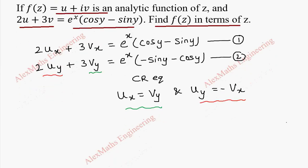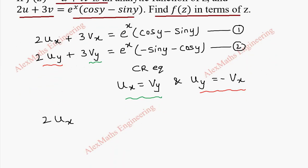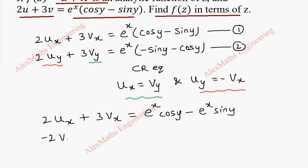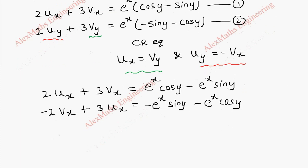The first equation is written as it is: 2ux plus 3vx equal to e power x into cos y minus e power x into sin y. And here, substituting uy with minus vx, we get minus 2vx plus 3ux equal to minus e power x sin y minus e power x cos y. These are our first and second equations.